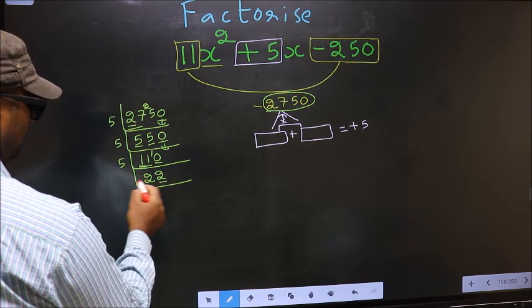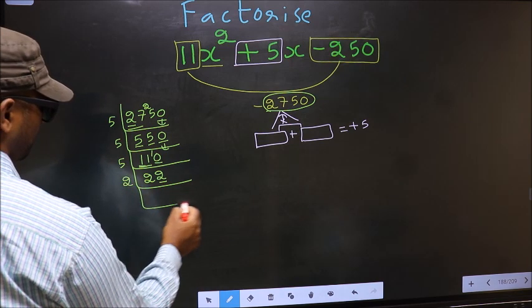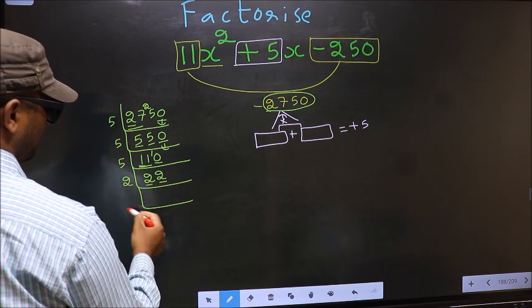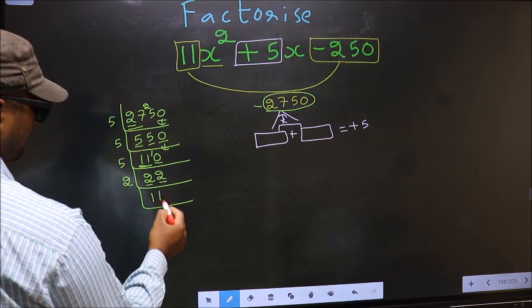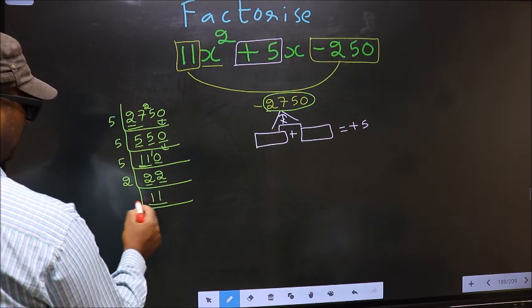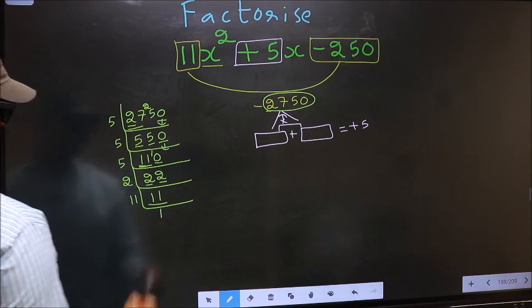Now last digit 2, even so take 2. First number 2, when do we get 2 in 2 table? 2×1 = 2. The other number 2, 2×1 = 2. Now 11, 11 is a prime number so 11×1 = 11.